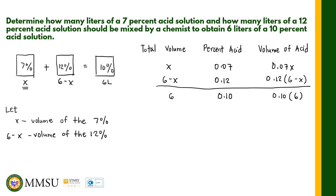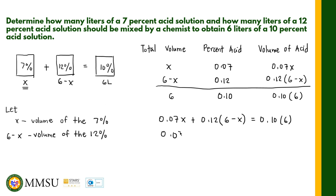Our equation comes from the last column: if we add the volume of acid for the first solution and the second solution, the result equals the total volume of acid. So we have 0.07x plus 0.12 times (6 minus x) equals 0.10 times 6. We now solve for x. Distributing 0.12 gives 0.07x plus 0.72 minus 0.12x equals 0.60.